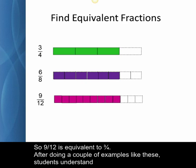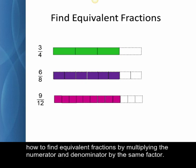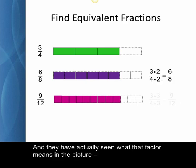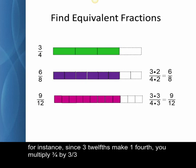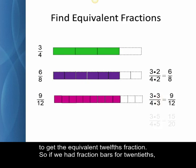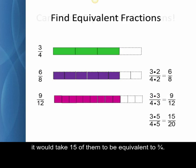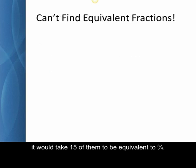After doing a couple of examples like these, students understand how to find equivalent fractions by multiplying the numerator and denominator by the same factor. And they have actually seen what that factor means in the picture. For instance, since three-twelfths make one-fourth, you multiply three-fourths by three over three to get the equivalent twelfths fraction. So if we had fraction bars for twentieths, it would take fifteen of them to be equivalent to three-fourths.